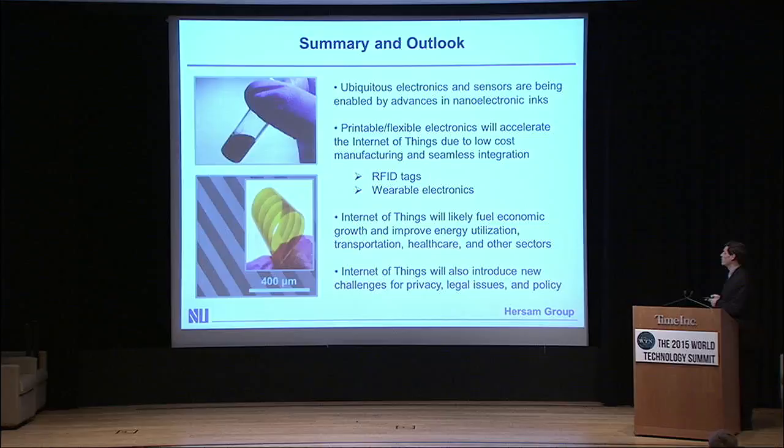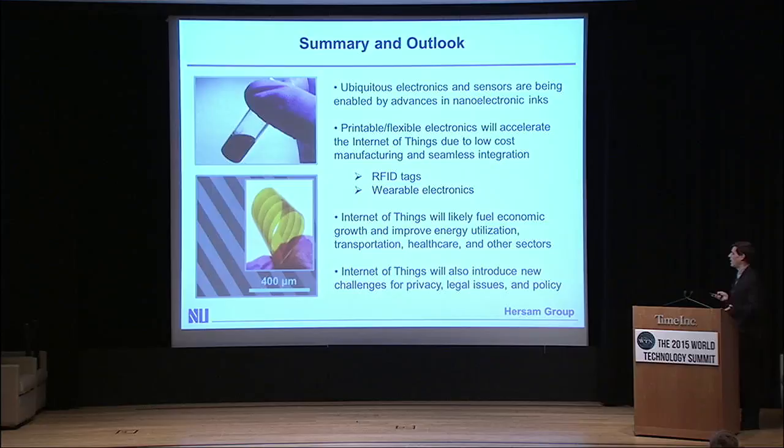In conclusion, ubiquitous electronics are upon us, enabled by advances in nano-electronic inks. We can now print these devices, and we believe that printed and flexible electronics will accelerate the Internet of Things due to low-cost manufacturing and seamless integration, such as RFID tags and wearable electronics. This will almost certainly fuel further economic growth and improve energy utilization, transportation, healthcare, and other sectors.